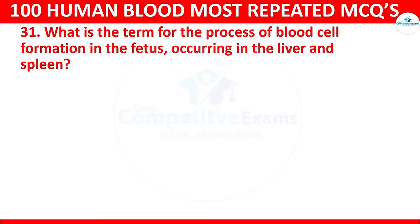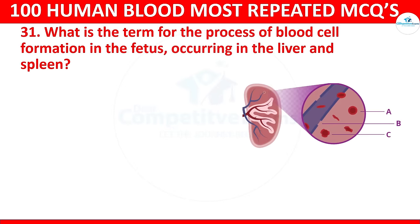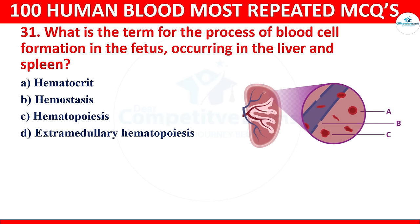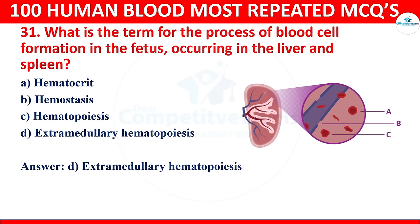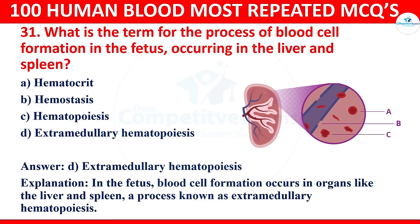Question 31: What is the term for the process of blood cell formation in the fetus, occurring in the liver and spleen? Options: hematocrit, hemostasis, hematopoiesis, or extramedullary hematopoiesis. The correct answer is extramedullary hematopoiesis. In the fetus, blood cell formation occurs in organs like the liver and spleen, a process known as extramedullary hematopoiesis.